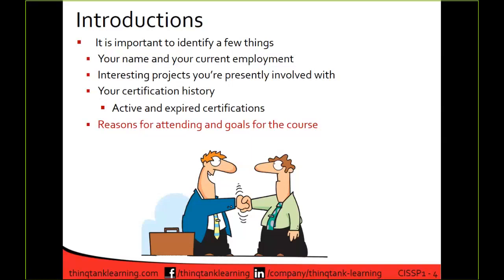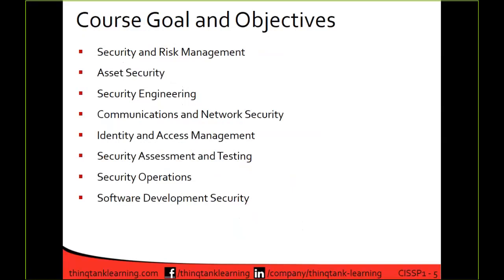The goals and objectives of this course: we break the course down into eight different domains. Domain one is security and risk management — the policy domain, where we talk about assessments, risk assessments, how to manage and mitigate risk in your environment, and what types of controls are available. Domain two is asset security. Domain three is security engineering, which is a big one because it involves cryptography — one of my favorite domains to teach. Domain four, communications and network security, covers infrastructure security.